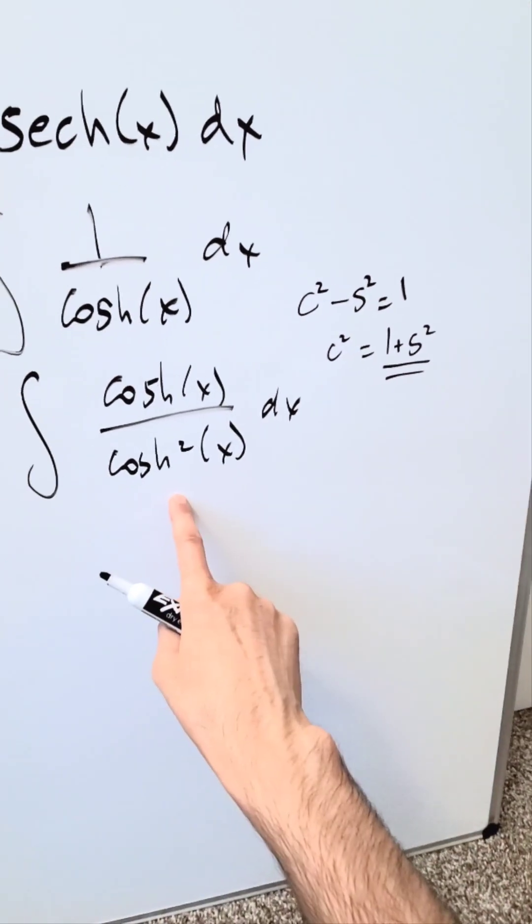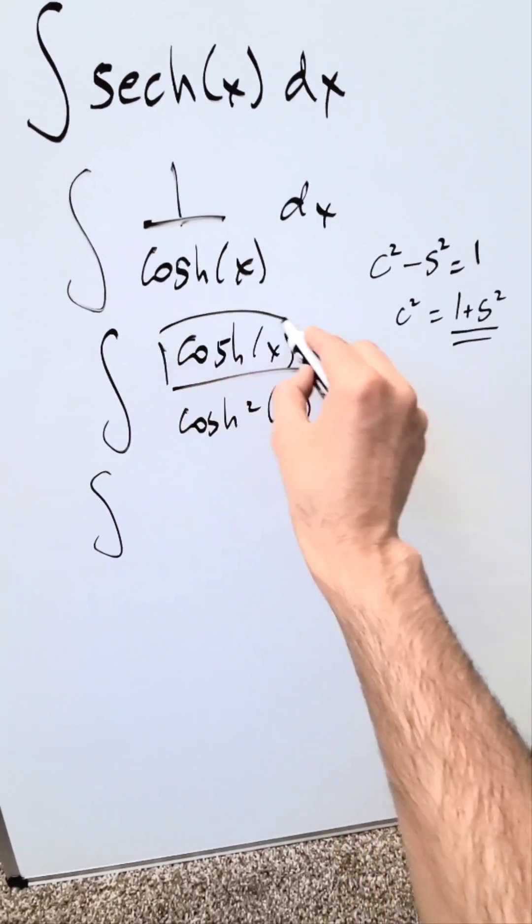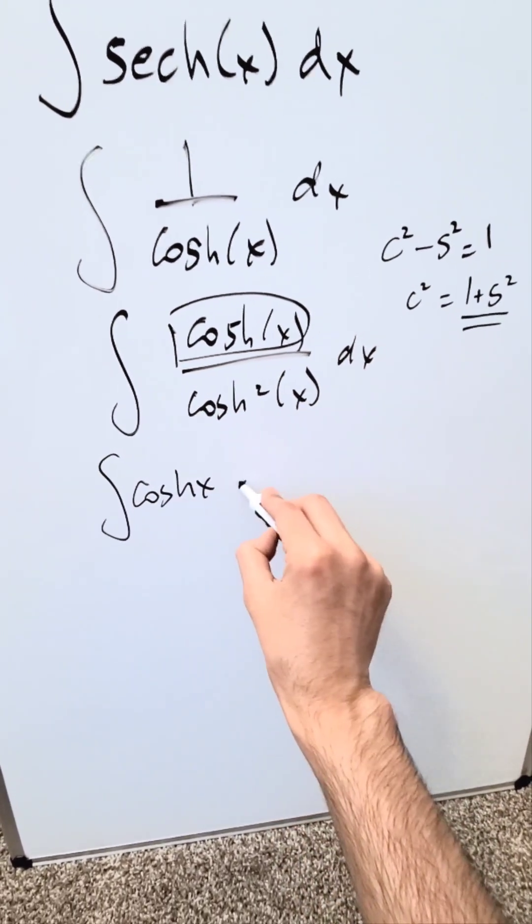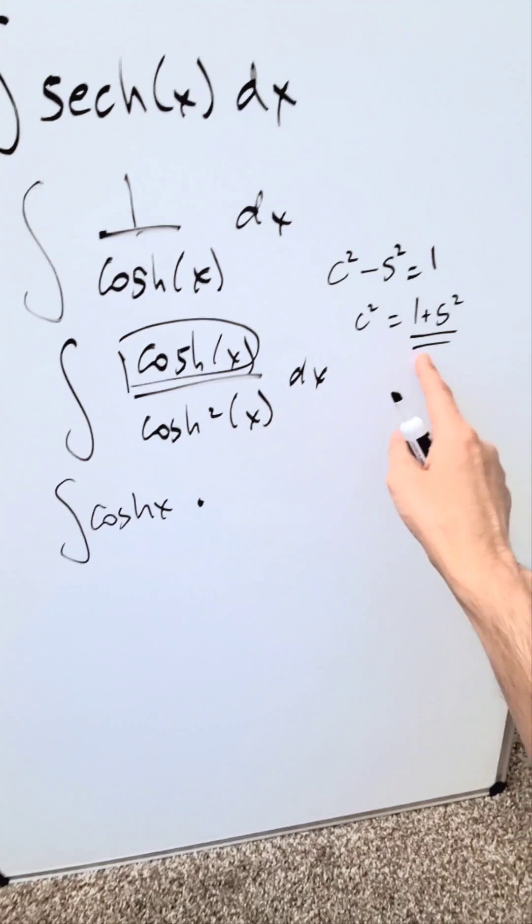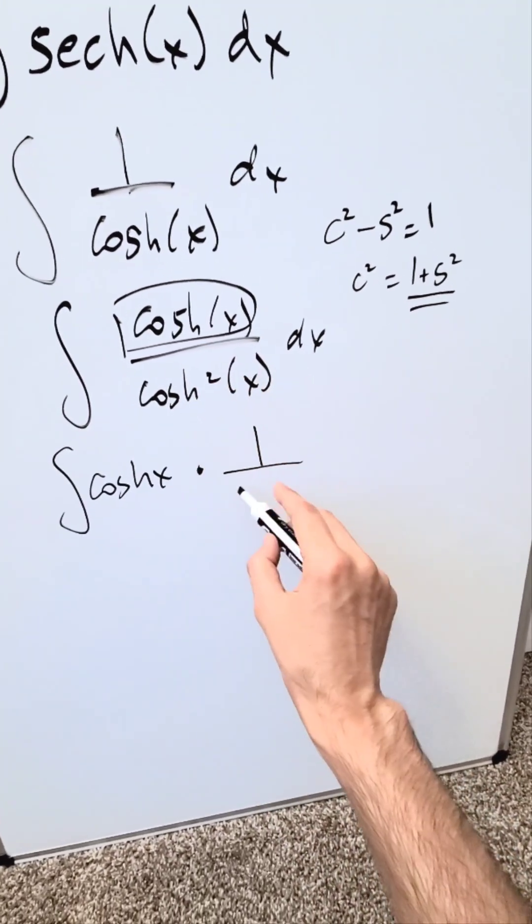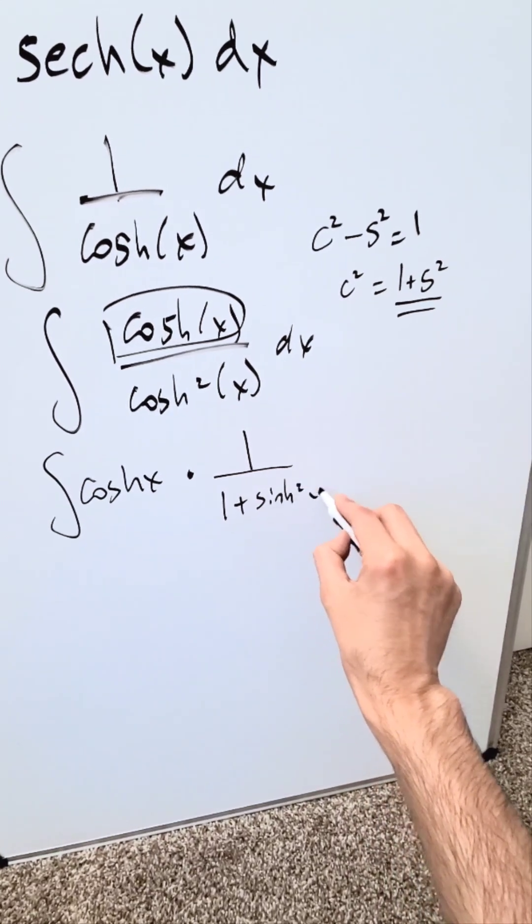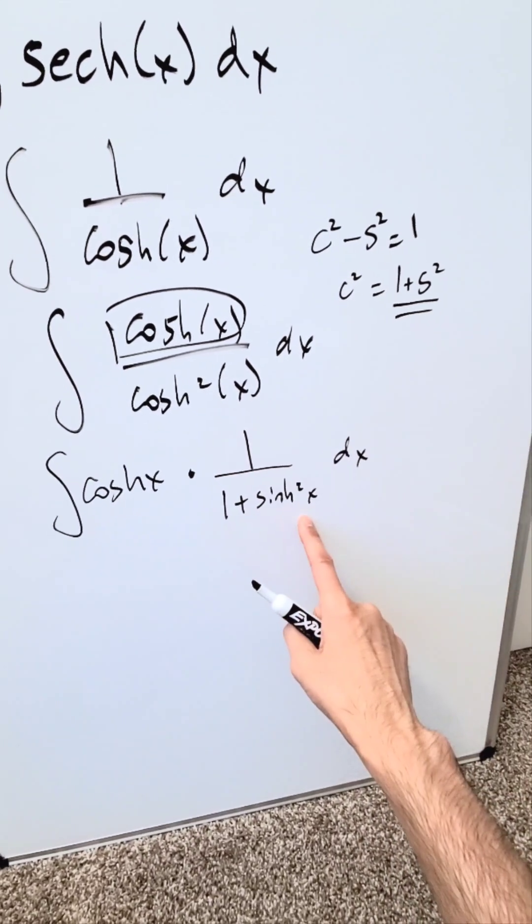This right here you'll substitute in the denominator. Look what I'm doing. I'm gonna take this item in the numerator and write it separately. Then I'm gonna write this denominator item using this identity separately, but it's still equivalent. 1 divided by 1 plus hyperbolic sine squared x dx. This is what we have.